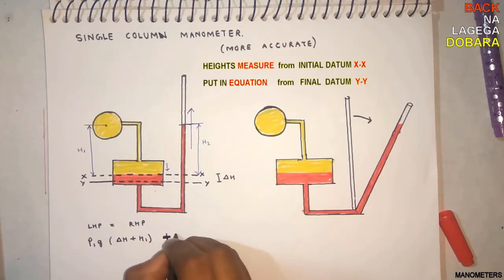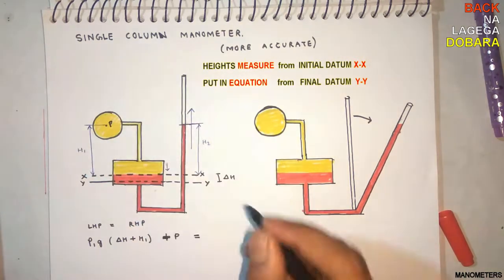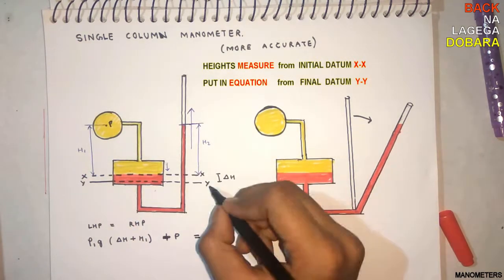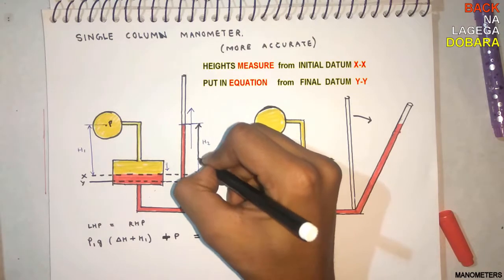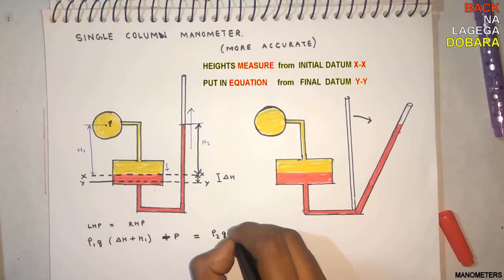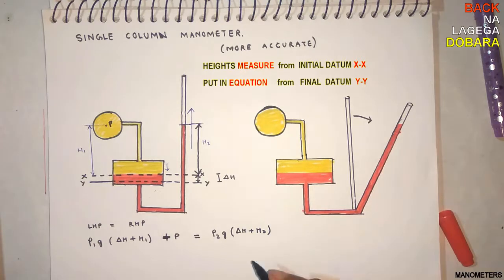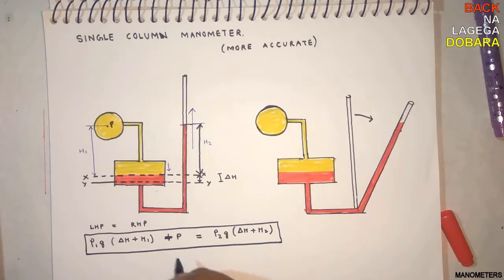On the right side, we have only one liquid, rho 2 G, H2 plus del H. Also note that there is one more equation.